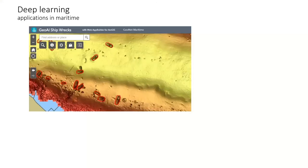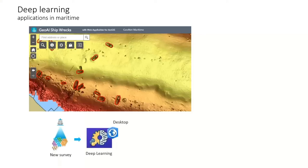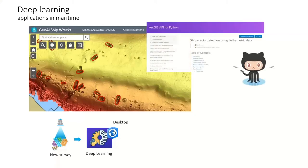One other thing I wanted to touch on was what we've been doing in deep learning. The first part, which was completed last year, was essentially the ability to take a new survey and use Esri's deep learning tools to find shipwrecks in the survey data. This was released through the ArcGIS API for Python, with a GitHub repository containing sample data and scripts. We took BAG data, fed it through a machine learning algorithm, and trained it how to find shipwrecks.